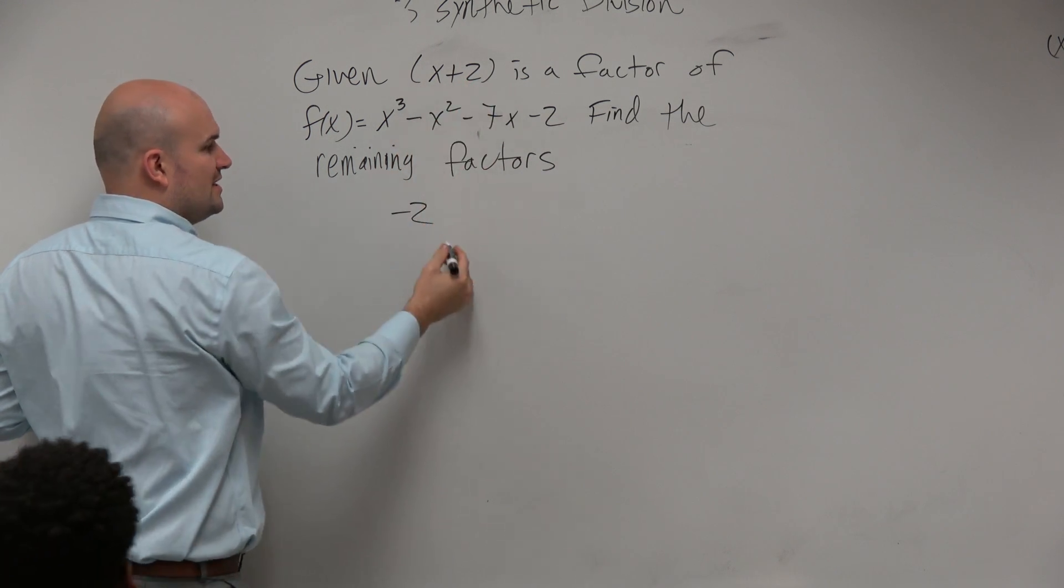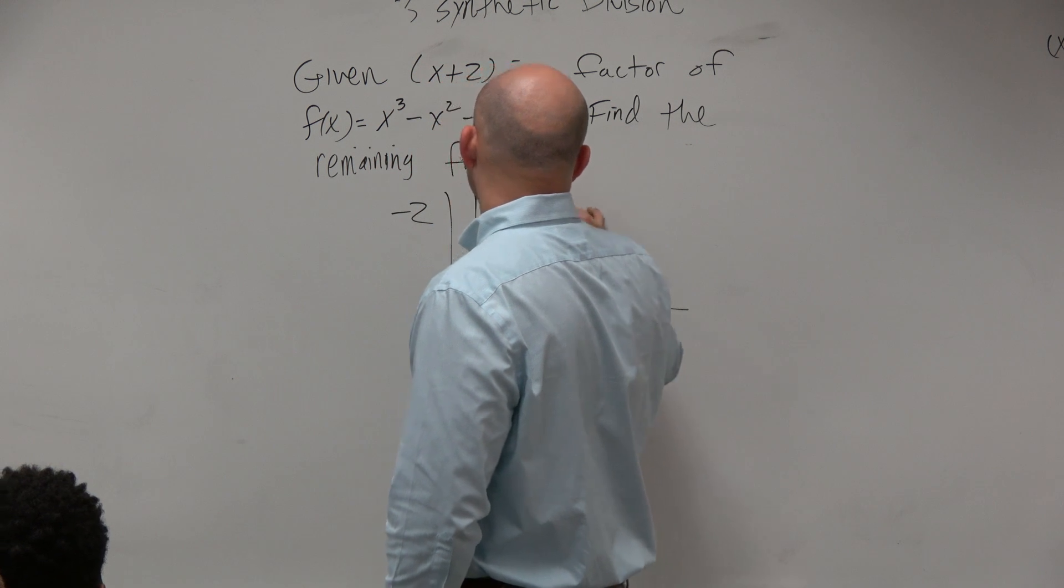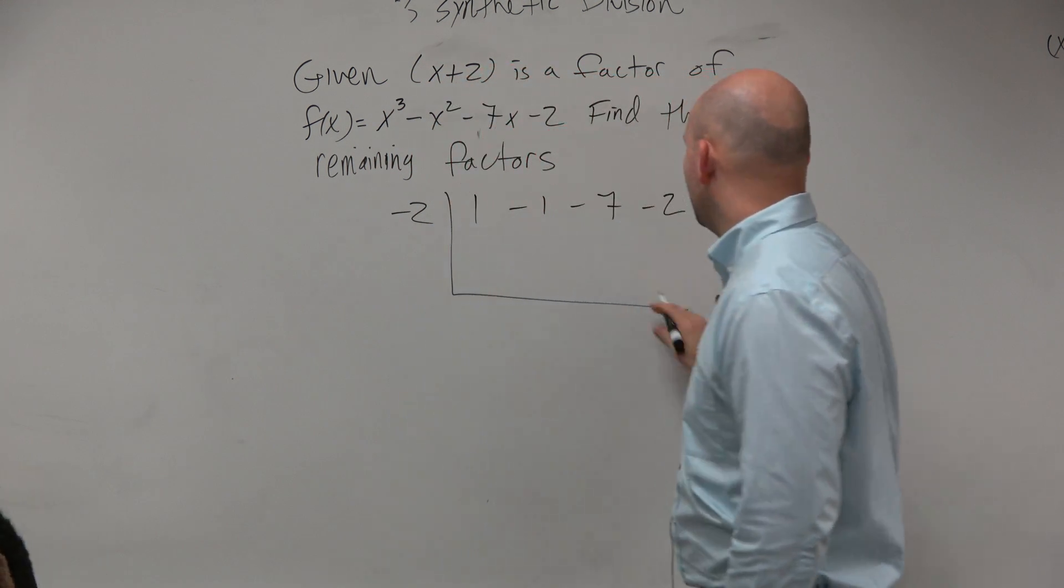I'm going to set x plus 2 equals 0, I get negative 2. I'll use my descending powers and make sure I have my coefficients: 1, negative 1, negative 7, negative 2.